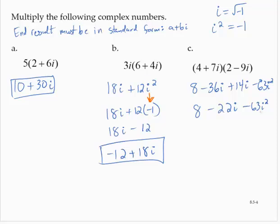Well, now recall, i squared is negative 1. So that becomes 8 minus 22i minus 63 times negative 1 becomes a plus 63. Combining the like terms and writing in the standard form, 71 minus 22i.